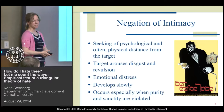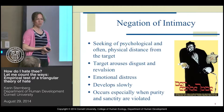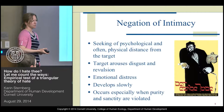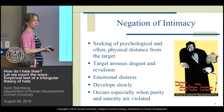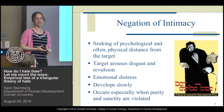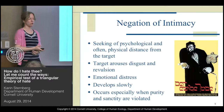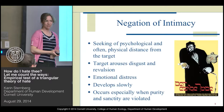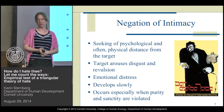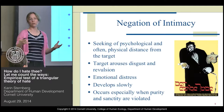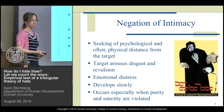The first component is negation of intimacy, which involves seeking psychological or often physical distance from the target of hate. The target does something that evokes disgust or revulsion in people, then they start feeling emotional distress. Negation of intimacy is something that develops slowly and also fades slowly, and occurs especially when purity and sanctity are violated — for example, when a group's holy book or holy place is desecrated.